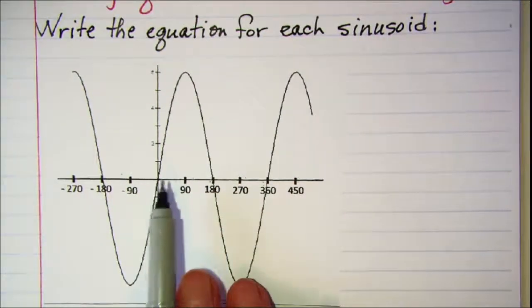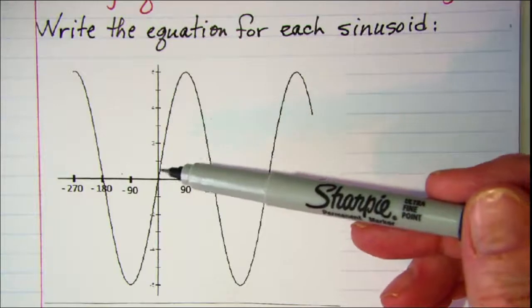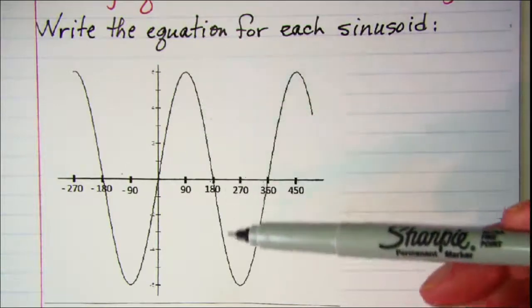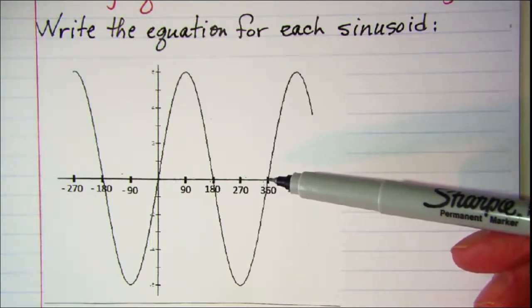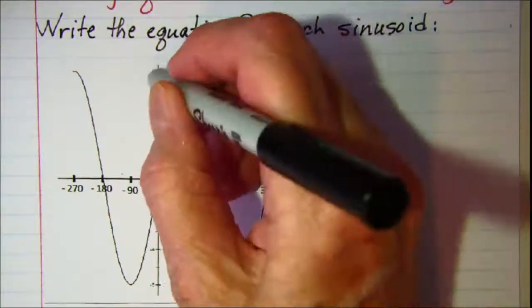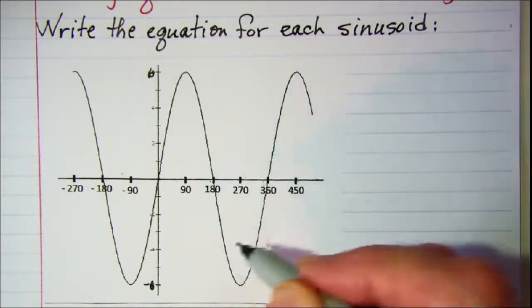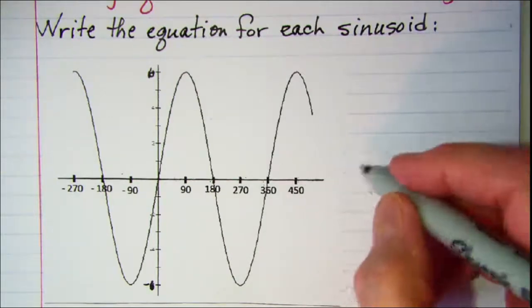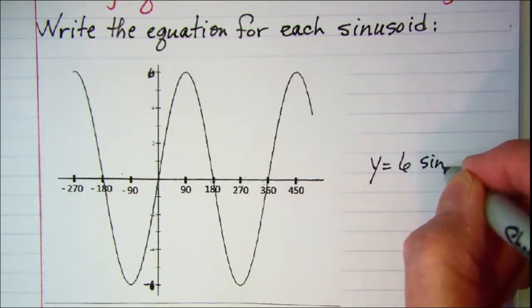Now our first one, you'll notice at the origin y is equal to zero. This is the graph of a sine curve, and we can see that the whole period is done in 360 degrees. So this is the usual sine curve. The only thing that's changed now is we have a max at six. That number is six and this number is negative six. So our graph has an equation y equals six times the sine of x.